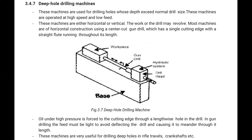The work or the drill may be revolved; revolving the work is also beneficial. Most machines are of horizontal construction, using a center cut gun drill which has a single cutting edge with a straight flute running through its length. Oil under high pressure is forced to the cutting edge through a lengthwise hole in the drill.